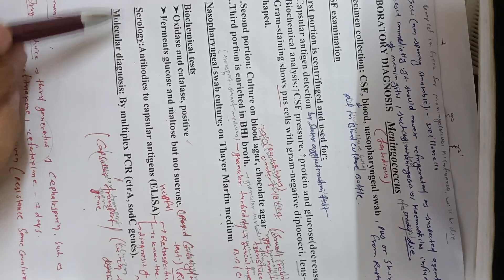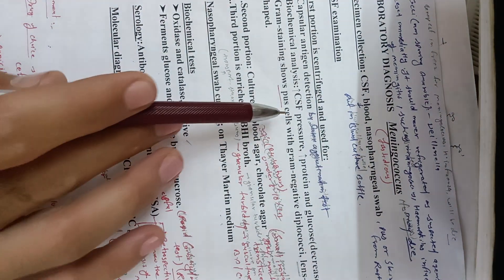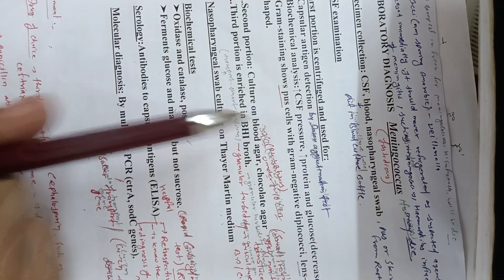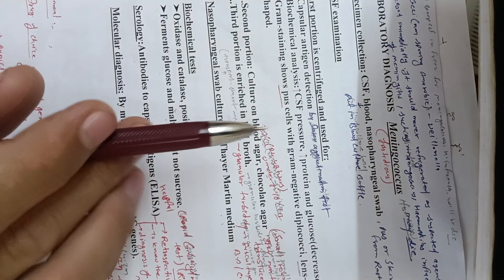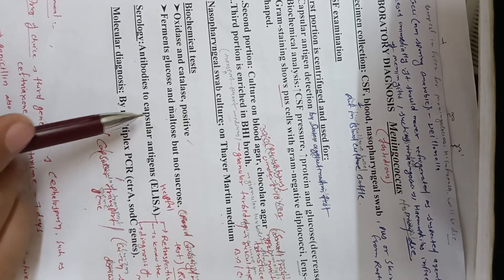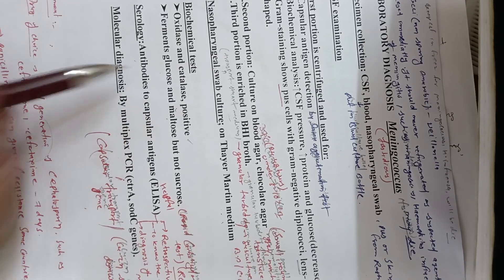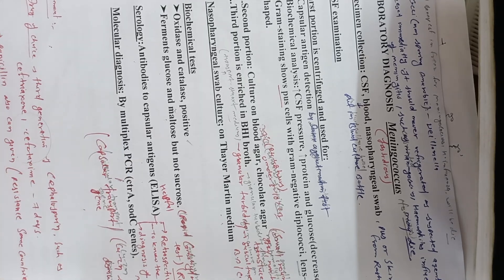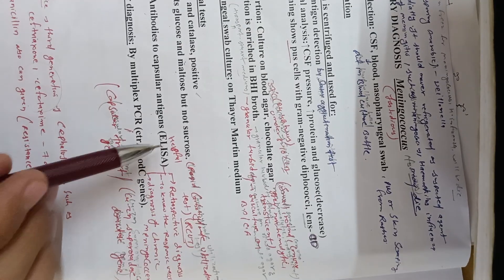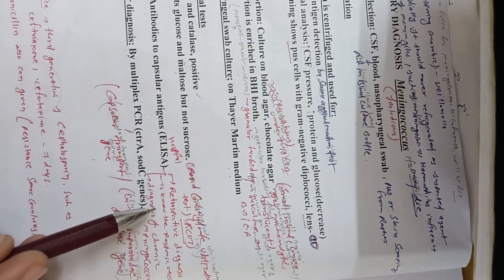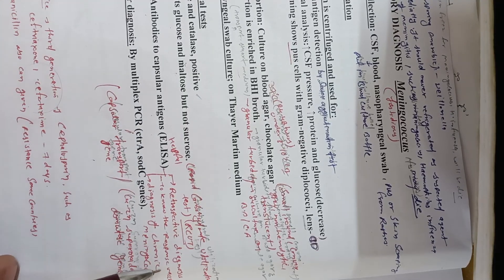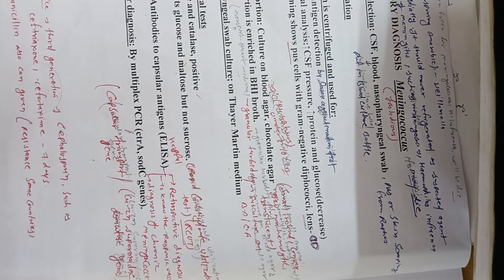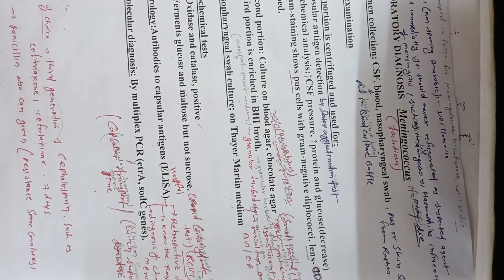For serology: because meningococcus is capsulated, the capsule acts as an antigen in the body and the immune system produces antibodies. We can detect antibodies to capsular antigen using ELISA. This also helps in retrospective diagnosis, assessing vaccination response, and diagnosis of chronic meningococcal infection.